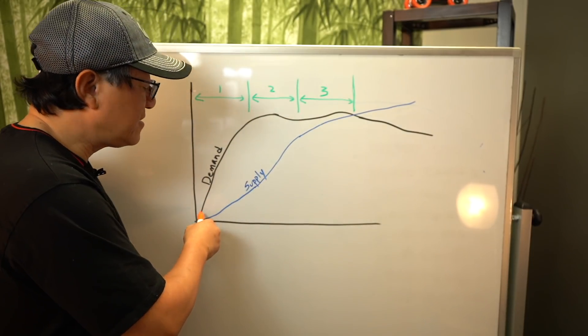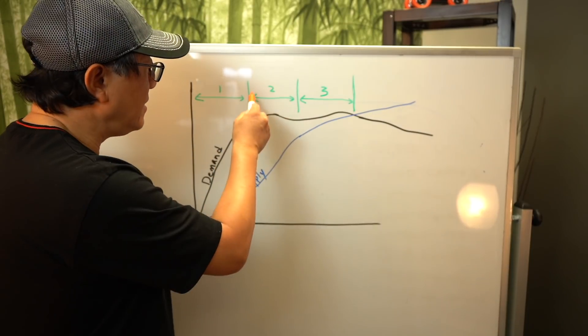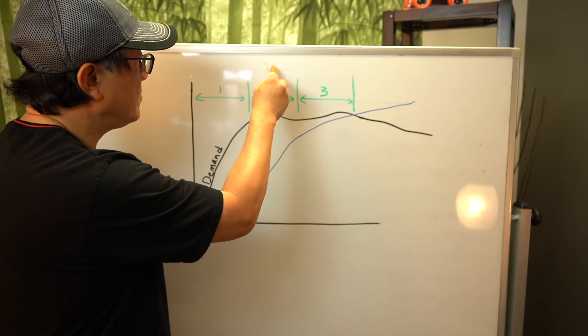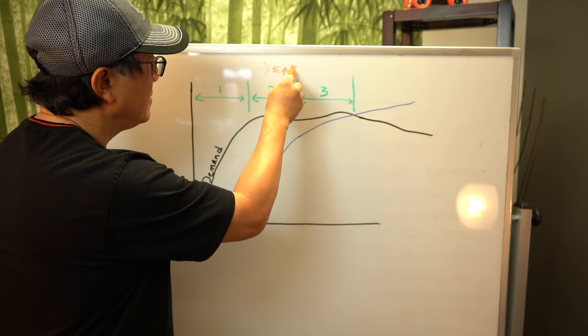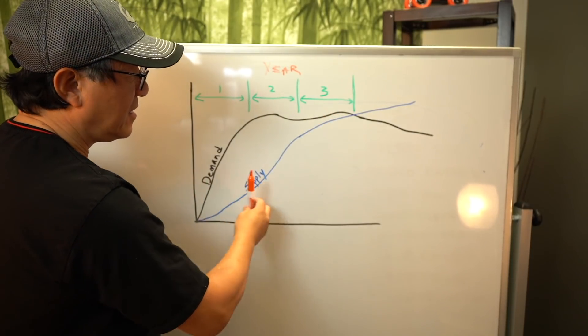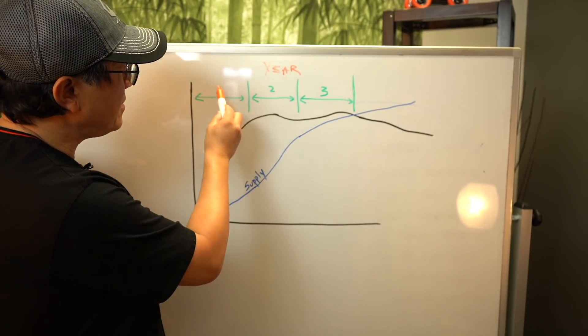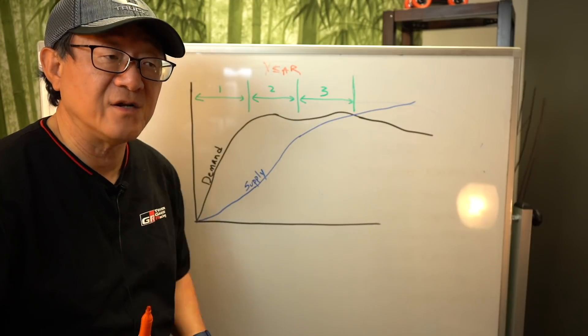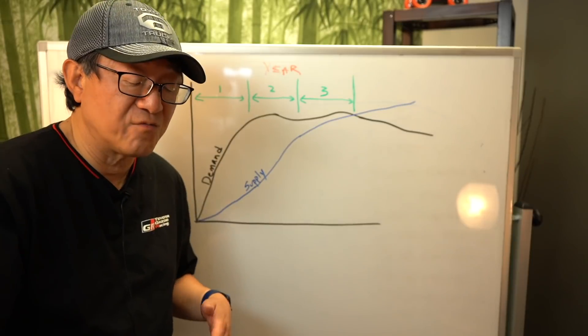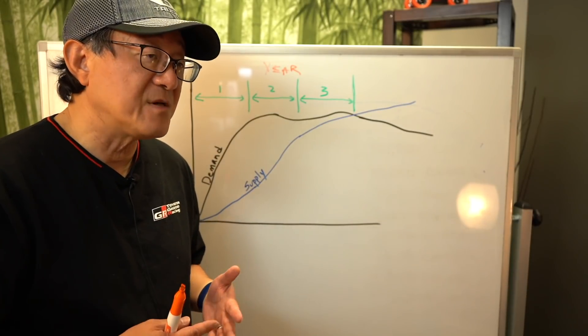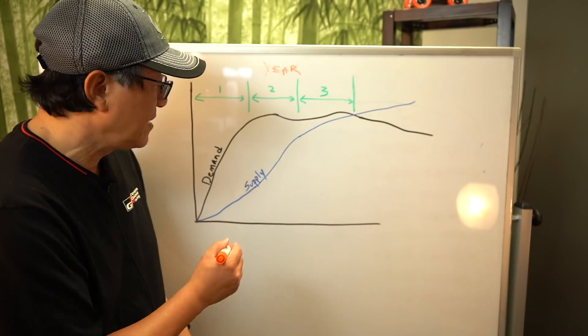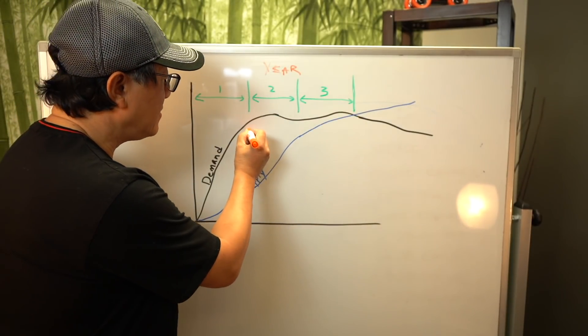So the demand is typically very high in the beginning, especially in the first year. This is the year on top. This is the demand curve. This is the supply curve. This is timeline here. So in the first year, demand is always high, it's going to shoot up. And unfortunately, the supply is low because the car company is still ramping up production. In some cases, it's maybe a limited production. And so there is a huge gap between demand and supply in the first year.